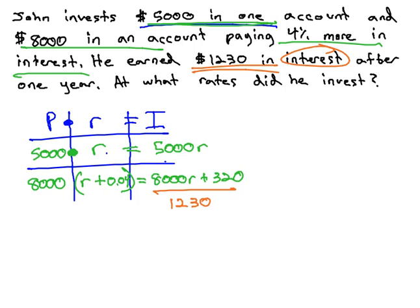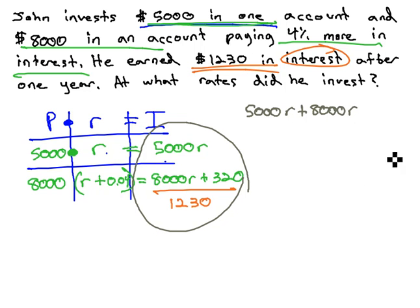As we only have one variable, we only need one equation, which comes from the interest column. 5,000R plus 8,000R plus 320 equals 1,230.